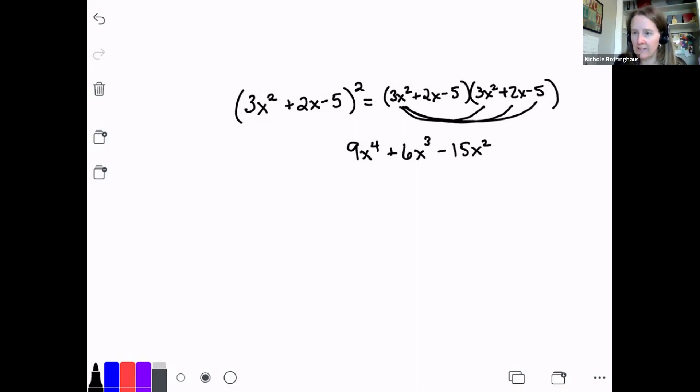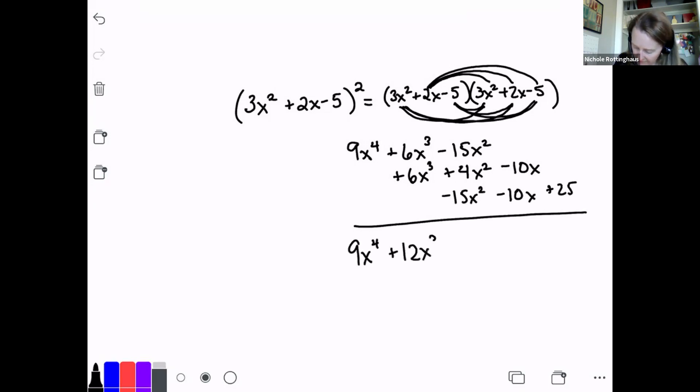Now I'm going to do the next one, and I'm going to line these up vertically again like in the warm up. So I've got 6x to the third plus 4x squared minus 10x. And then the last one: minus 15x squared minus 10x plus 25. And then we'll add everything up. So 9x to the fourth plus 12x to the third. And then I've got minus 30 plus 4 gives me minus 26x squared minus 20x plus 25. And that's my answer.